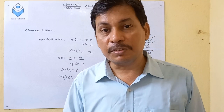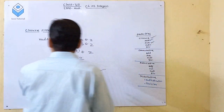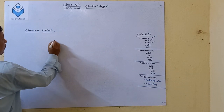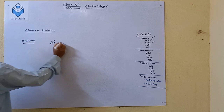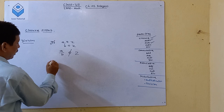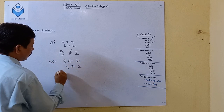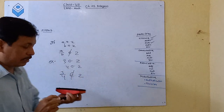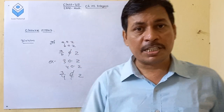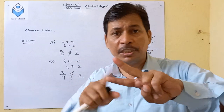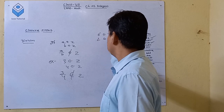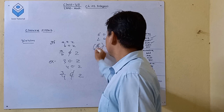Now we will discuss that the closure property for division does not satisfy. For division: if A belongs to Z and B belongs to Z, then A divided by B is not necessarily in Z. For example, 3 belongs to Z and 4 belongs to Z, but 3 divided by 4 does not belong to Z. Similarly, 5 divided by 6 is not an integer. However, note that 6 divided by 2 equals 3, which is an integer — but not all cases satisfy this.